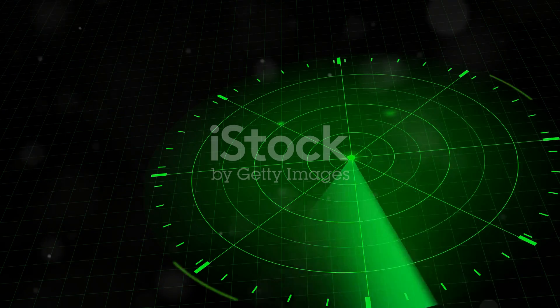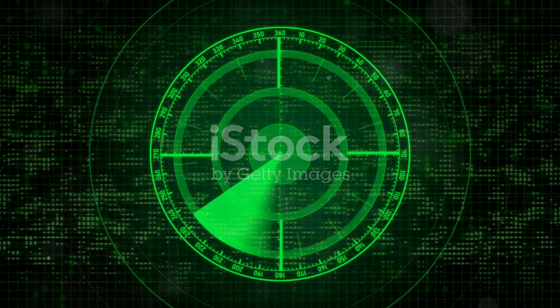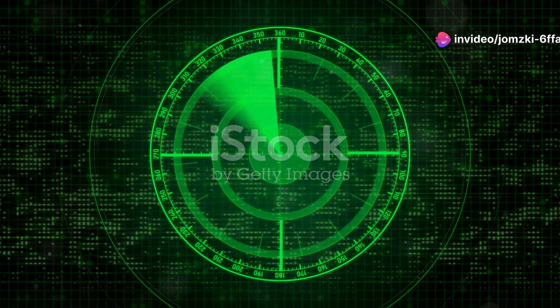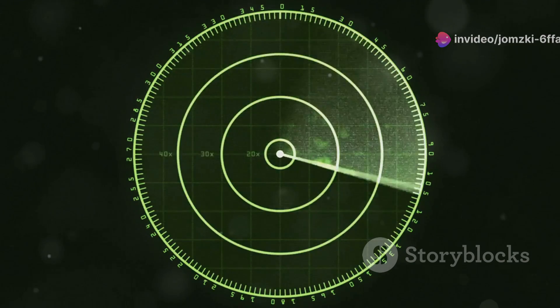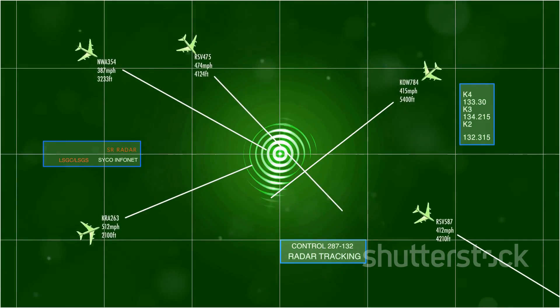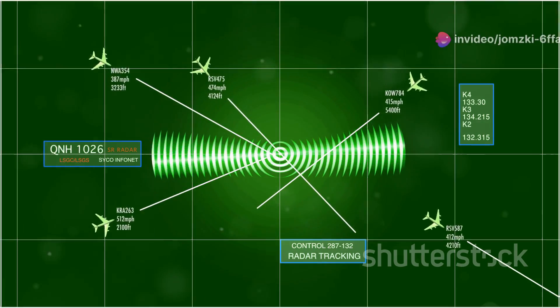Modern radar systems are incredibly sophisticated, capable of distinguishing between different types of aircraft, filtering out clutter from the environment, and even predicting a target's future trajectory. They are the silent sentinels that provide the initial warning of an impending aerial threat, giving the SAMS system precious time to react and engage.